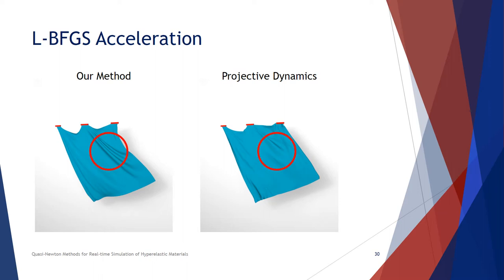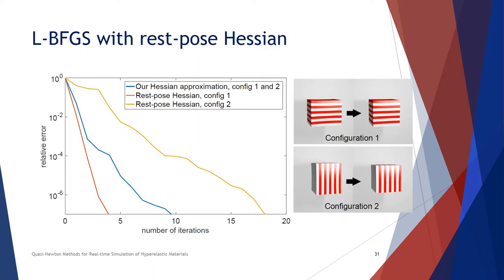Aided by L-BFGS, our method can produce better wrinkles compared to projective dynamics, as I highlighted in the red circle. Note that our method converges fast not solely because of L-BFGS. We tried other matrices to warm-start L-BFGS and compared to our method too.